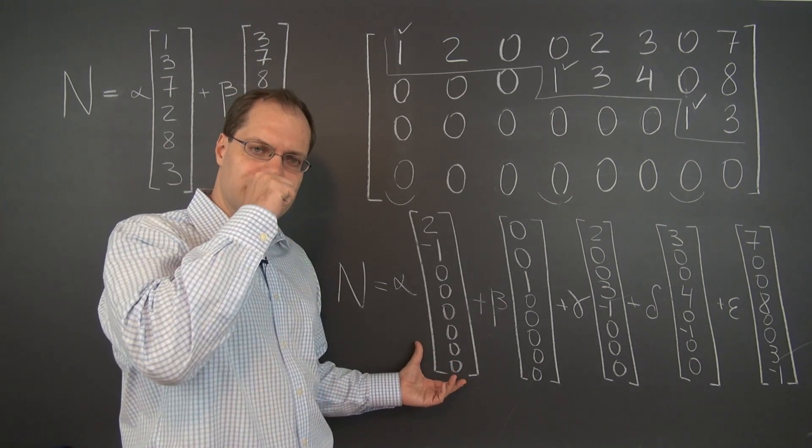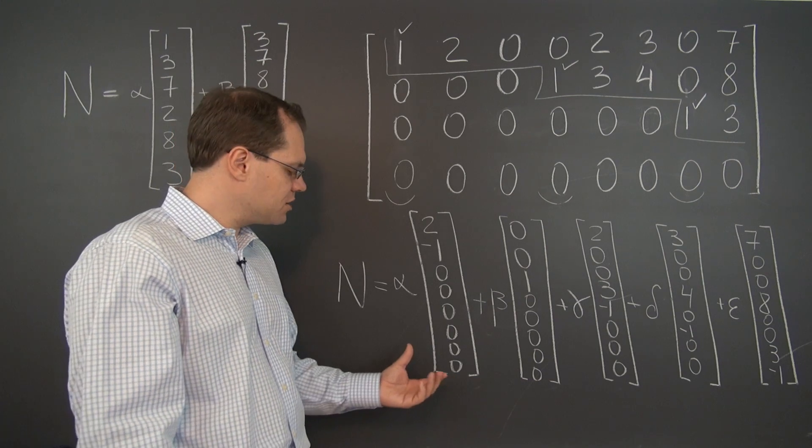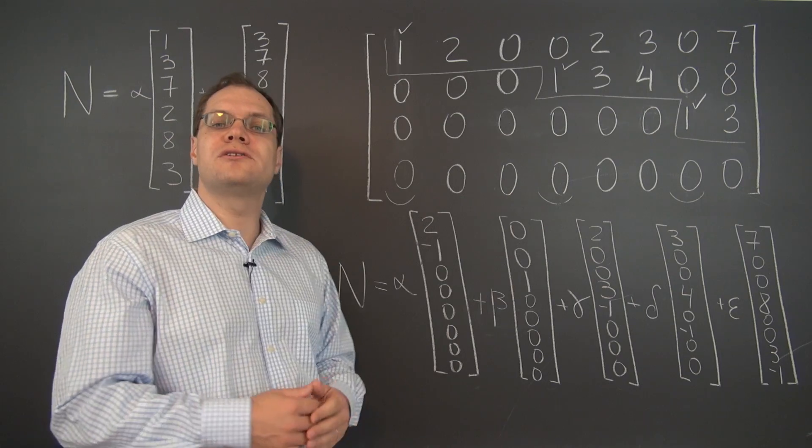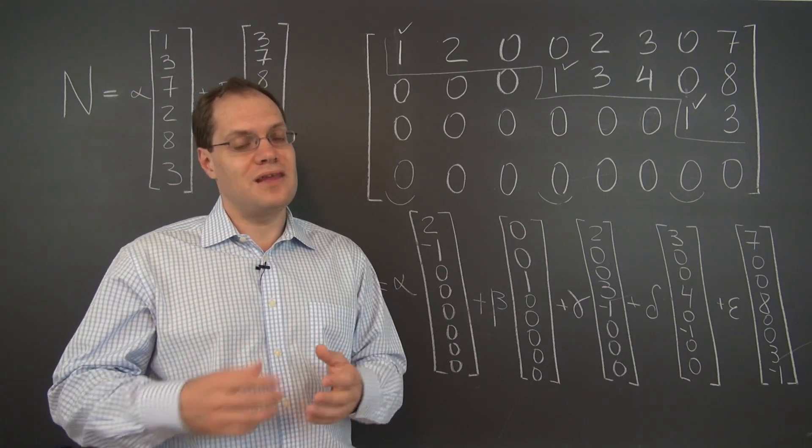So maybe it's possible after all to reconstruct the row reduced echelon form from the null space. But of course, that's only clear if it is clear.